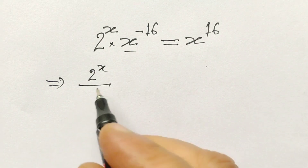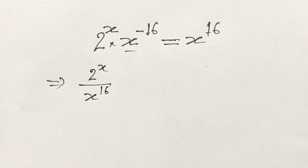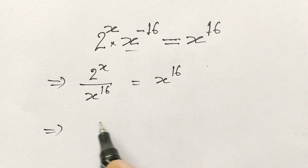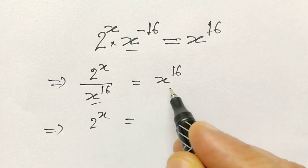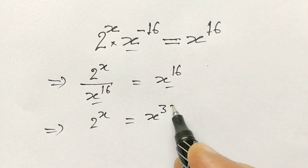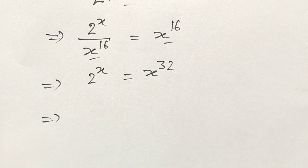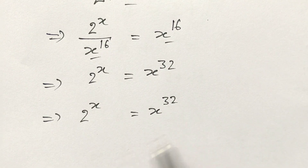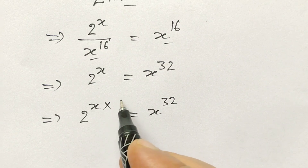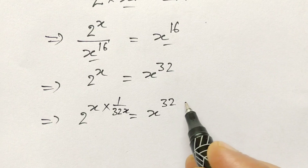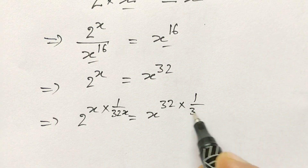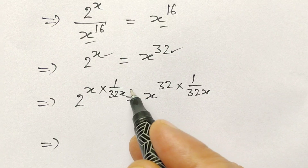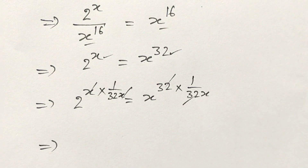So 2 to the power x over x to the power 60 is equal to x to the power 60. Now 2 to the power x will be equal to x to the power 32. If we multiply the power by 1 over 32x, and here also 1 over 32x — the x's cancel out and the 32s cancel out.